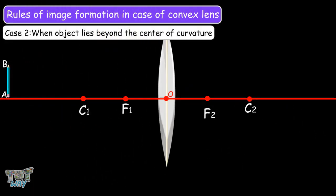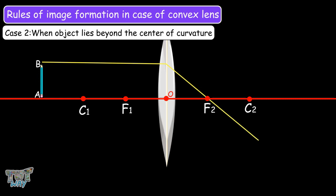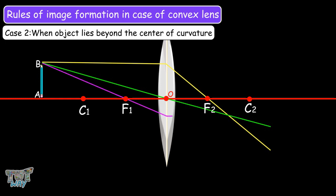Case 2 is when the object AB is beyond C1, beyond the center of curvature. The ray parallel to the principal axis refracts and passes through F2. The ray through the optical center emerges without deviation. The ray passing through F1 refracts and becomes parallel to the principal axis. These three rays meet at a point B'. Drawing a perpendicular from B' to the principal axis gives point A', so the image A'B' is a diminished, real, inverted image.